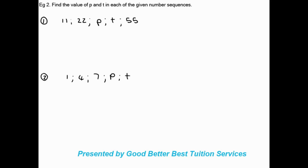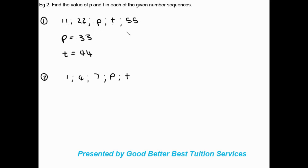Now let's look at these number sequences and find the missing values p and t. We have 11, 22... What was done to 11 to get 22? We added 11. Multiplying by 2 would give 44, 88, which exceeds 55, so we use addition. Adding 11 each time: p = 33, t = 44, and the next term would be 55 — confirming the rule works.